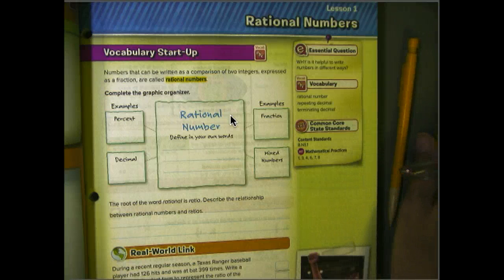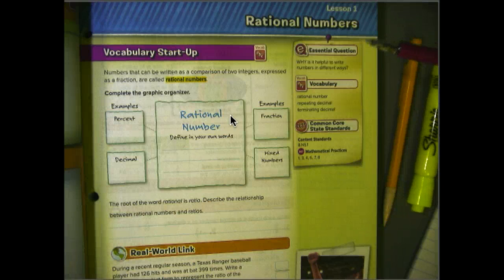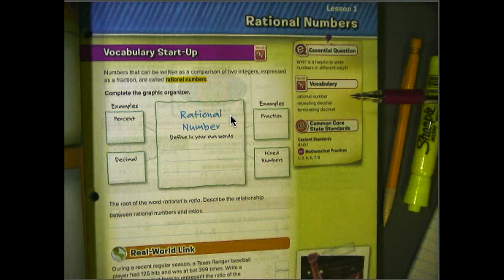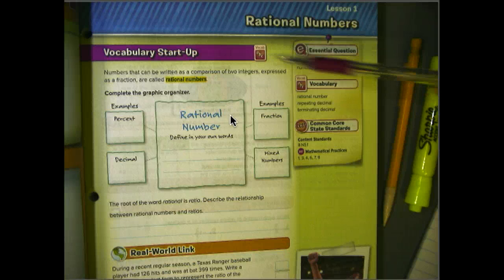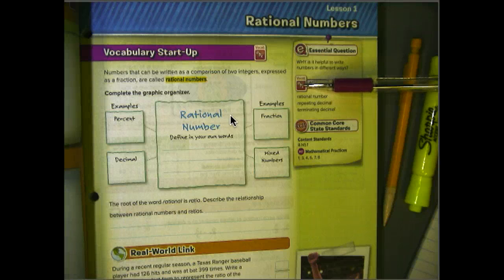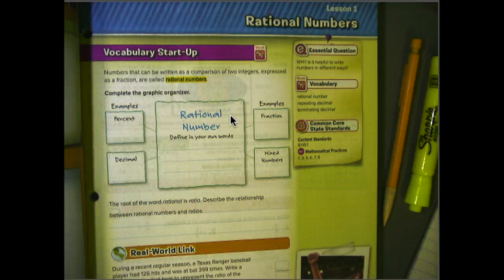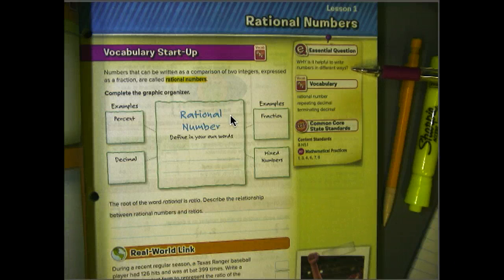First of all, this lesson may be a little bit longer just because this is the first time we've used our new book. And if you are on the online text, any time you see these icons, such as the one that says Vocabulary ABC, you can click on that and it will help you with your vocabulary words. As we go through, I'll point out some other icons that you can use to help you throughout your lesson. So the first thing we want to do is just look at our essential question. Why is it helpful to write numbers in different ways?